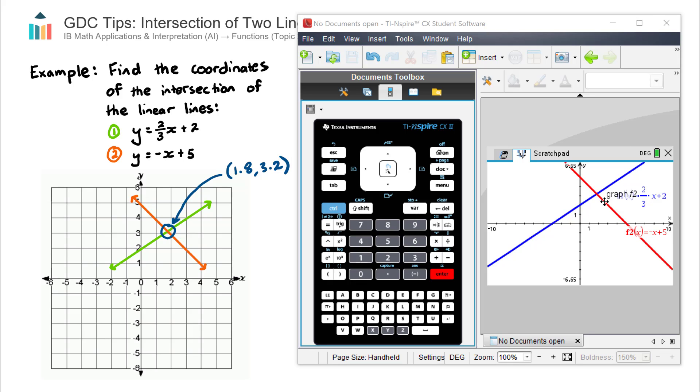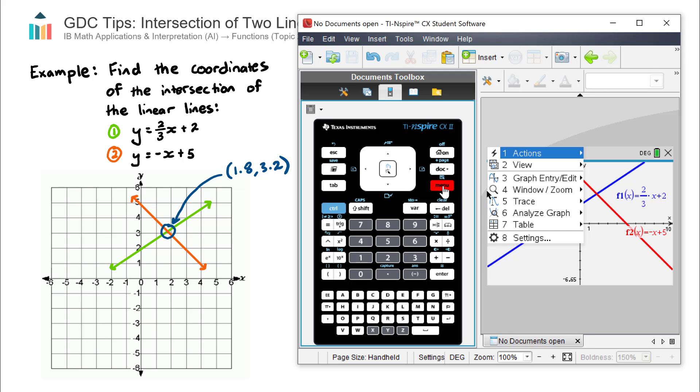Now to find the coordinates of the intersection, we use the analysis tools area of our calculator. So we go menu, number six, analyze graph, and we're going to choose number four, intersection.